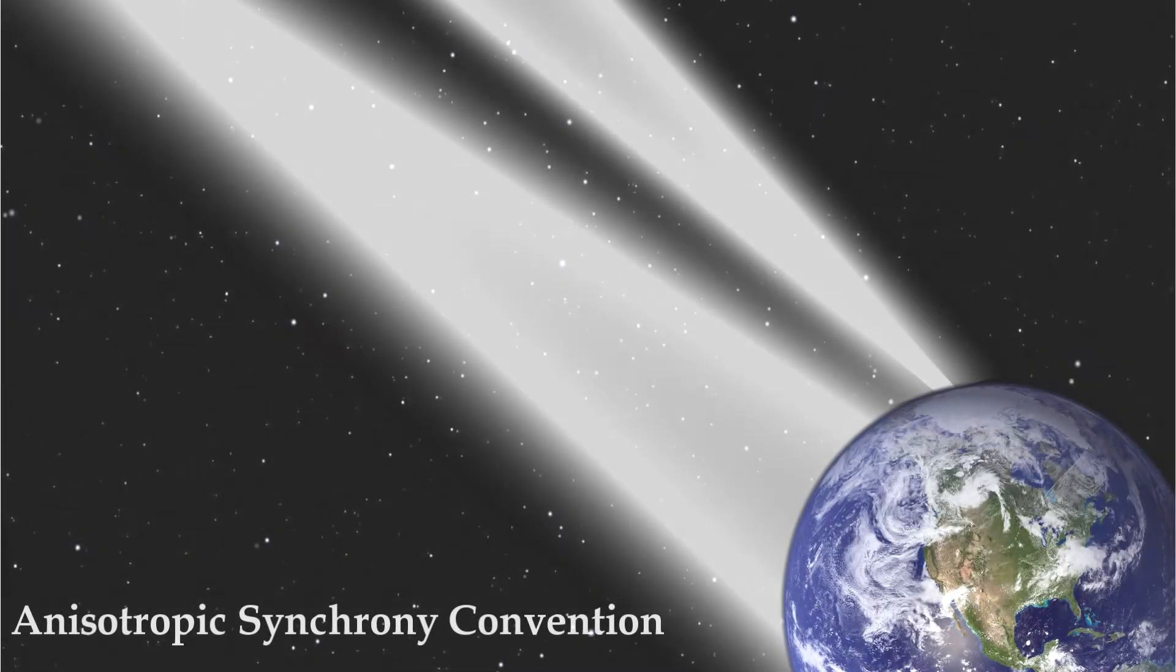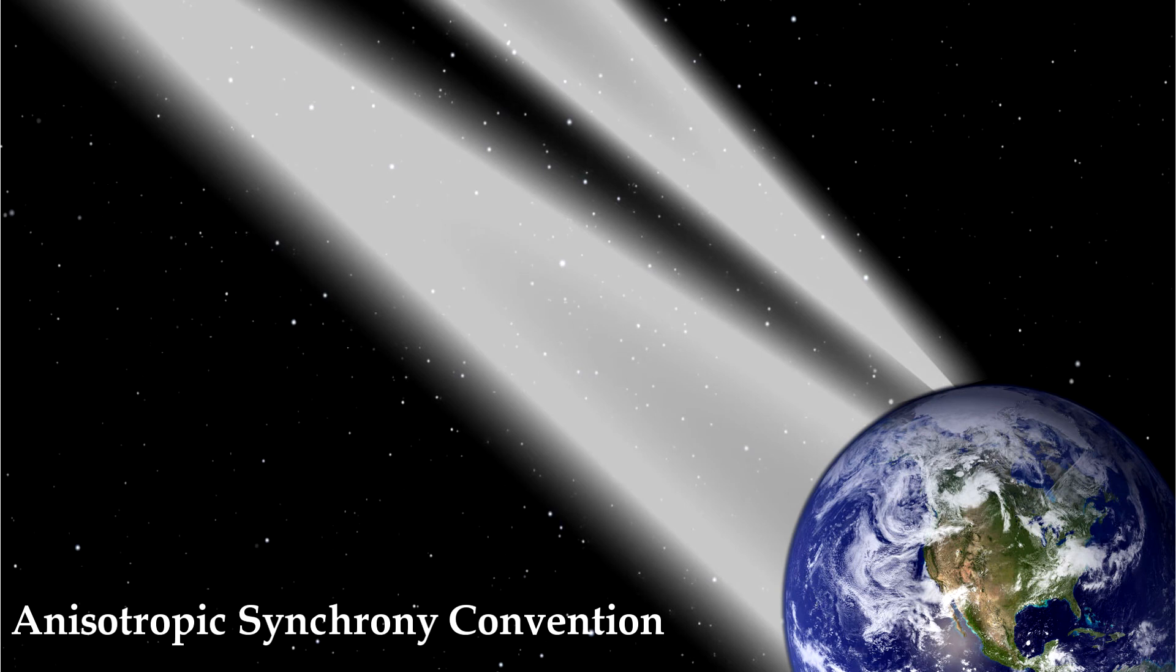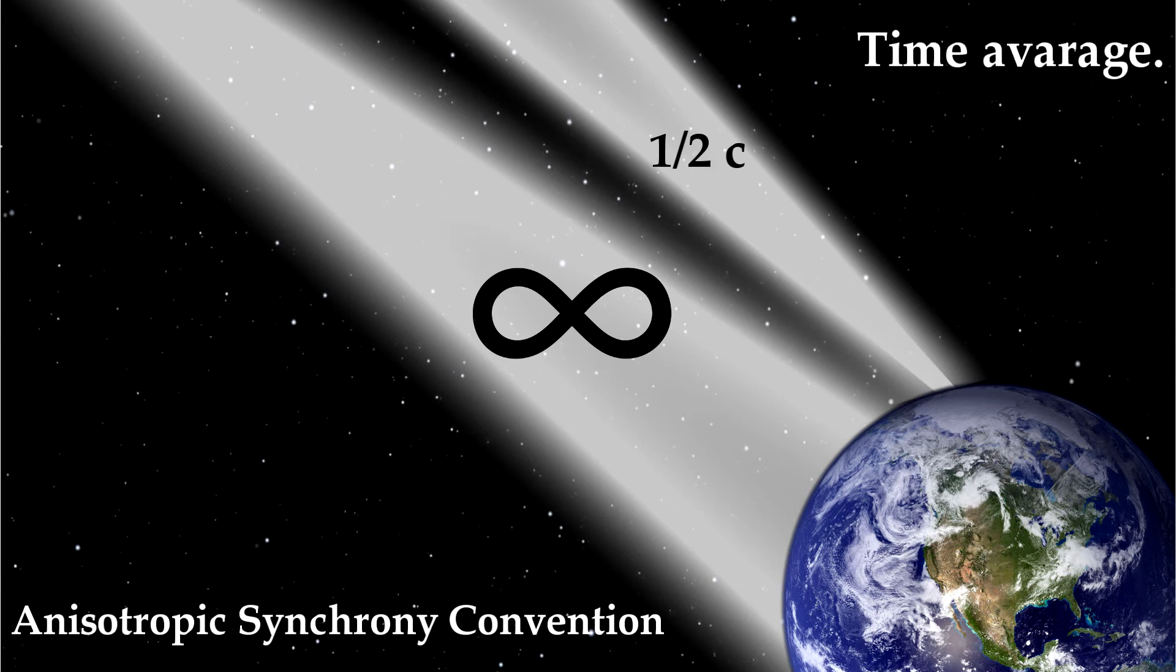So by choosing the anisotropic synchrony convention, the speed of light is infinite when directed toward Earth and half c when moving directly away. You see, the round speed is set at 186,282 miles per second. And when it's infinity towards me and half c away, then it averages out the same.